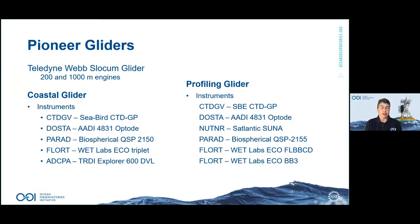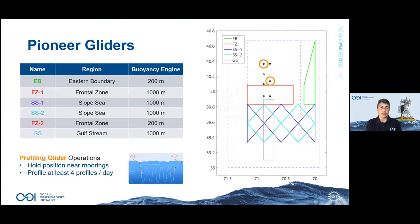At the Pioneer Array, we operate Teledyne Webb Slocum gliders using either 200 or 1,000 meter buoyancy engines, in two flavors: coastal gliders and profiling gliders. Coastal gliders are deployed along track lines — eastern boundary, frontal zone — while the two profiling gliders hold position near the inshore and central sites, doing profiles at least four times a day rather than traveling track lines.